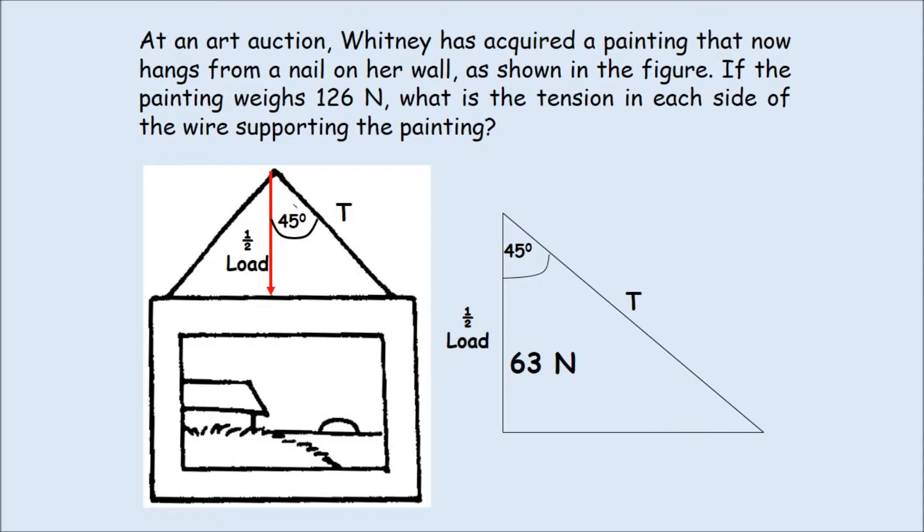So if we look at one side of it, we see that the painting weighs 126 newtons. Half the load is going to be 63 newtons. So that's pretty significant. And then you have a 45 degree angle. So you're actually solving for the tension. So you know the adjacent, which is 63.